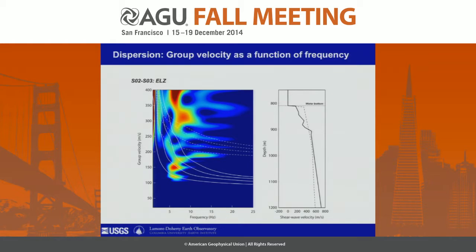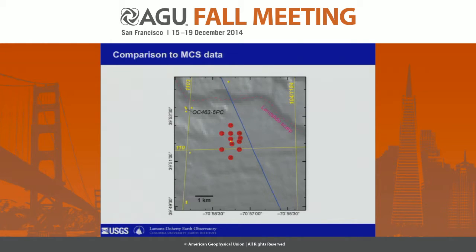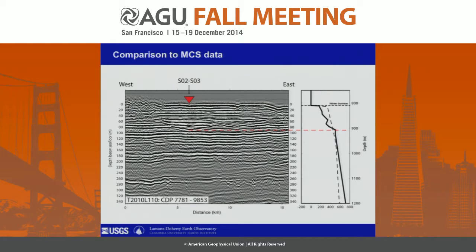Now we have a preliminary model of VS as a function of depth, and we can compare that to MCS data through the same array. This is a line through the array, and the pairs of instruments I've been showing correlations from come from this north-south line. Our VS profile as a function of depth is compared to a depth-migrated reflection image, and you can see that the nick point — where we go from slow velocities to a higher velocity — lines up very nicely with this prominent reflector. Some other coarser boundaries may also line up with other reflections. This is all preliminary, but we can say we're sensitive to velocities in the upper 100 meters of sediments, which is the scale of sediments failing in landslides.